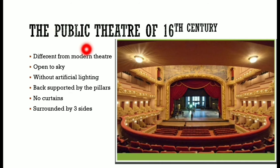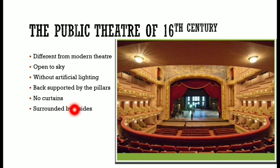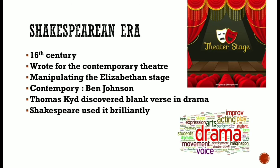The public theatre of the 16th century differed in many important ways from the modern theatre. It was open to the sky without artificial lighting. The stage was a raised platform with the tiring-house at the back supported by pillars. There was no curtain and the main platform could be surrounded by the audience on three sides. Around the theatre there were galleries. By the 17th century, the enclosed theatre gained importance with increasing attention to scenic devices as theatre became more private.